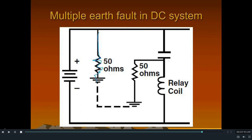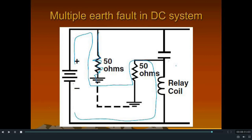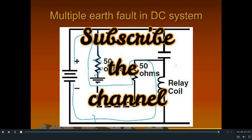Now we will see the case of multiple earth fault or double point to earth fault. As shown in the figure, there is an earth fault in the positive arm of the battery as well as on the negative arm of the battery, and the negative arm fault is also after the relay coil. In such cases of double earth fault, the whole battery voltage V will get discharged through the relay coil and will come back to the battery negative terminal. Hence a rated current will flow through the relay or circuit breaker coil, which will be able to actuate it. Hence in such cases only there will be mal tripping in the system. Friends, if you like the video please like, share, and comment, and don't forget to subscribe to the channel.